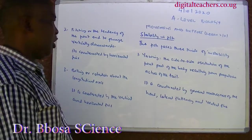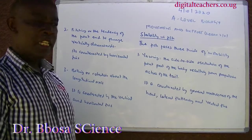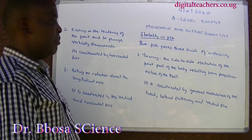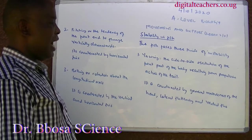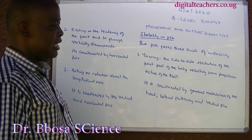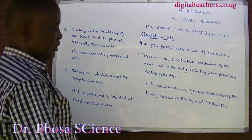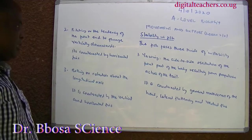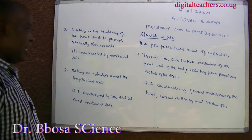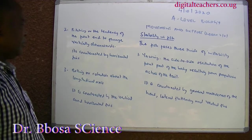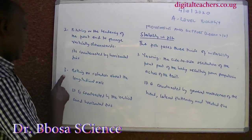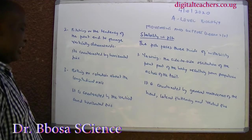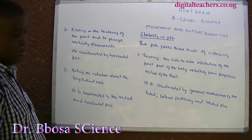Stability in fish: fish faces three kinds of instability. One, yawing — side-to-side oscillation of the front part of the body resulting from the propulsion action of the tail — counteracted by general massiveness of the head, lateral flattening, and ventral fins. Two, pitching — tendency of the front end to plunge vertically downward — counteracted by horizontal fins. Three, rolling — rotation about the horizontal axis — counteracted by vertical and horizontal fins.